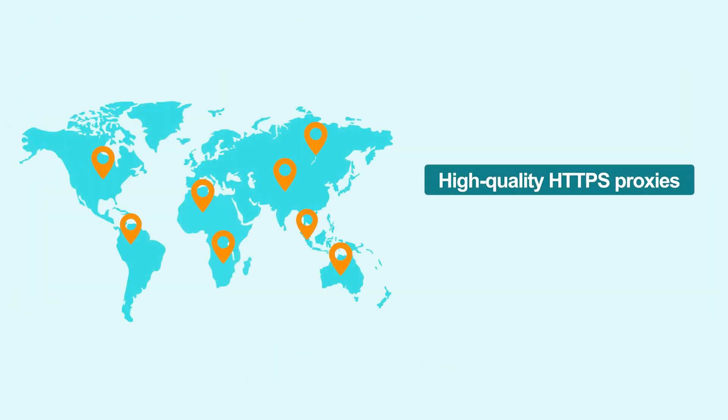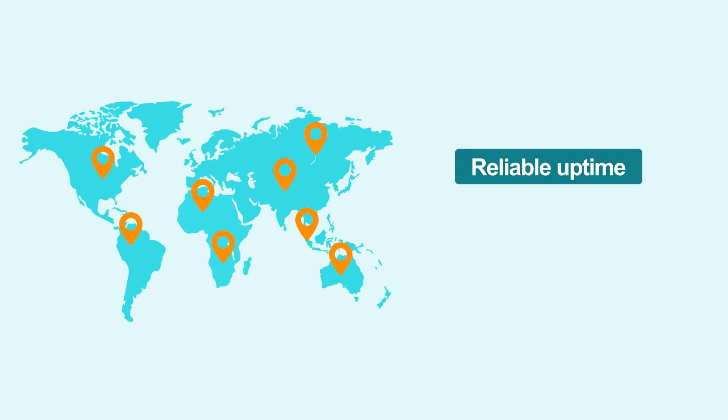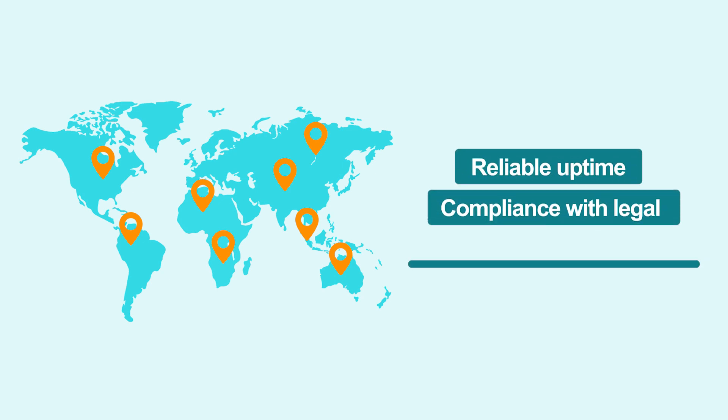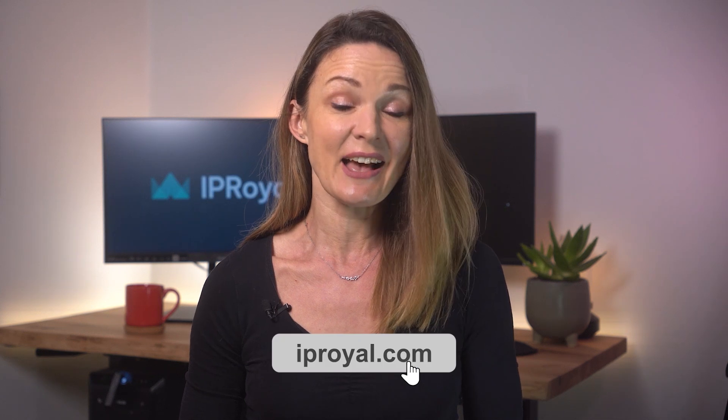That's where IP Royal comes in. With high-quality HTTPS proxies from 195 locations worldwide, reliable uptime, and compliance with legal and data protection standards, they've got the best solution for bypassing SSL verification when it makes sense. Ready to use CURL without SSL certificate checks? Head to iproyal.com and get the best SSL or HTTPS proxies for seamless web testing and debugging.